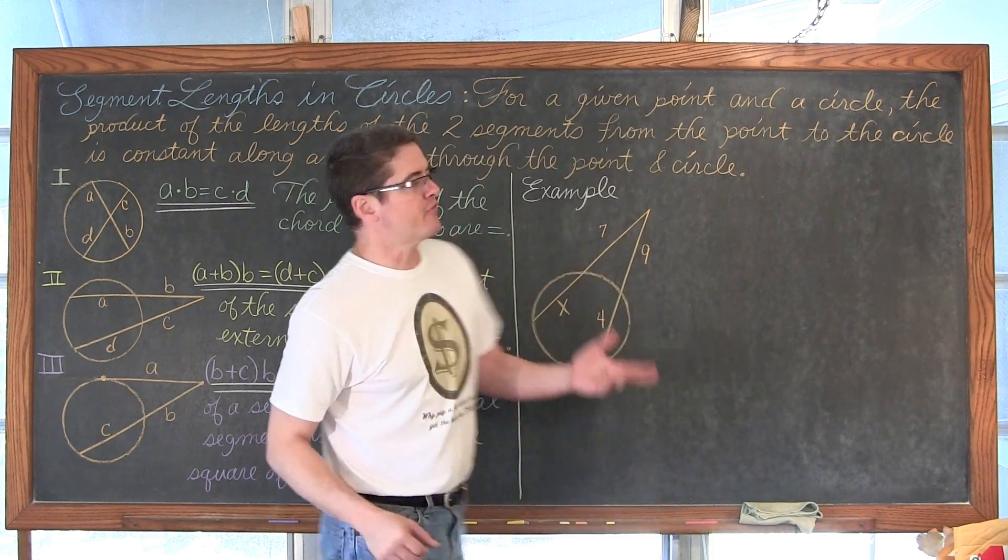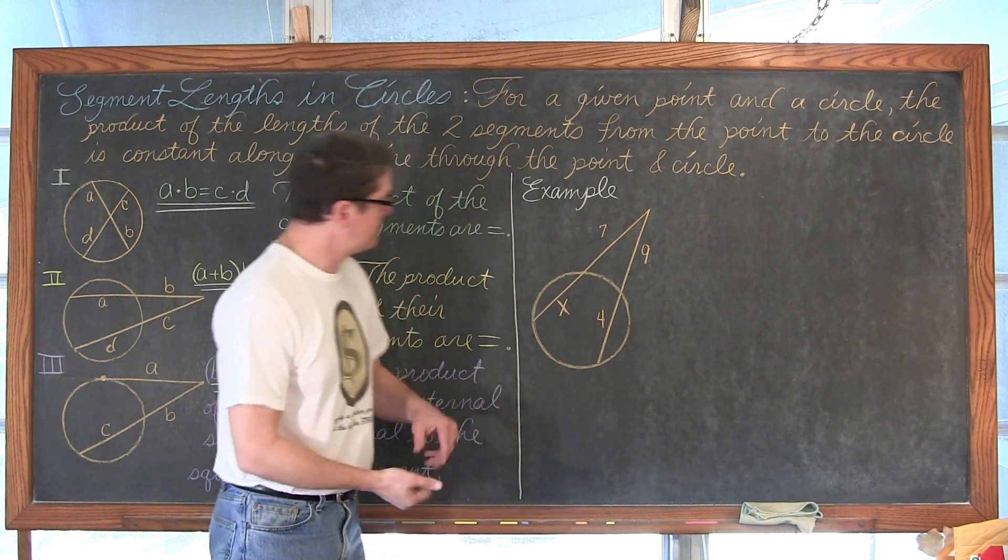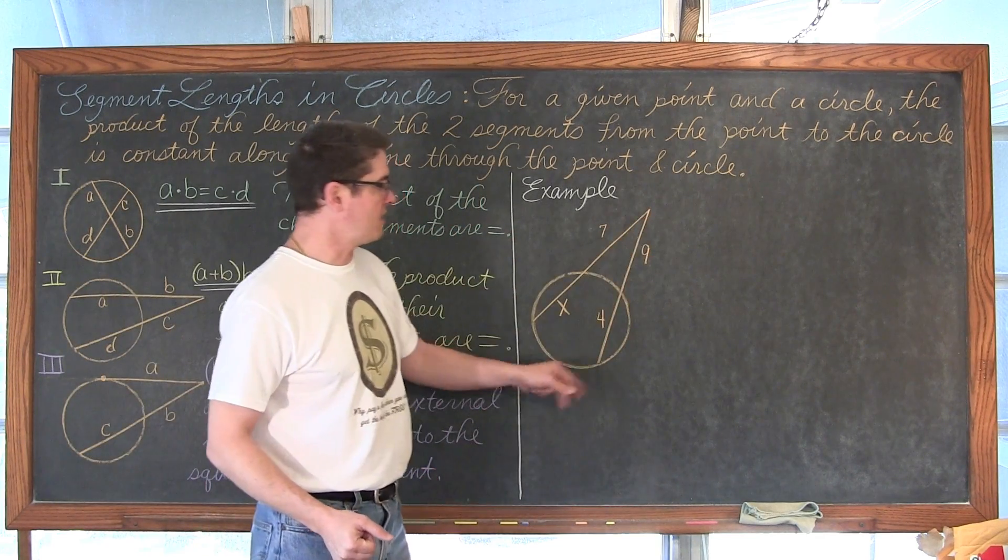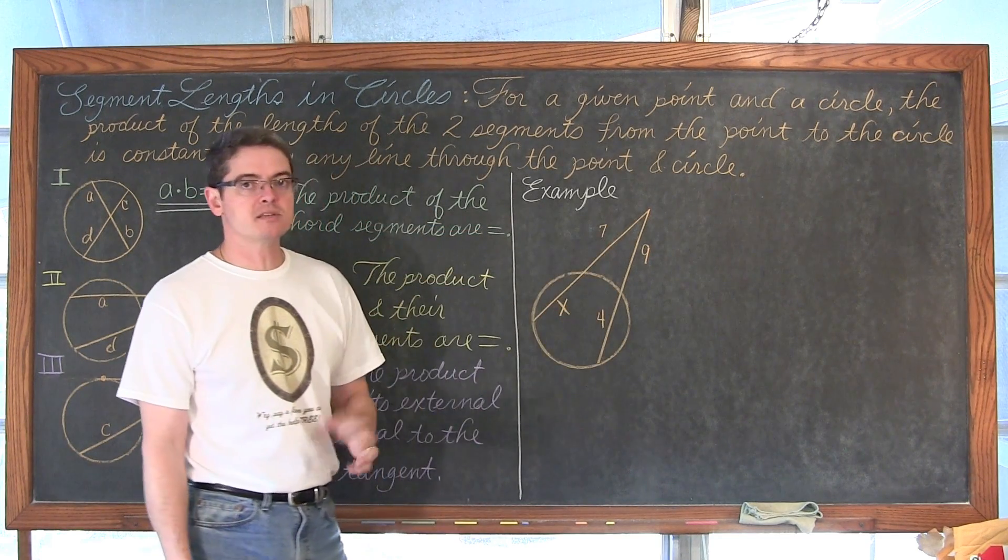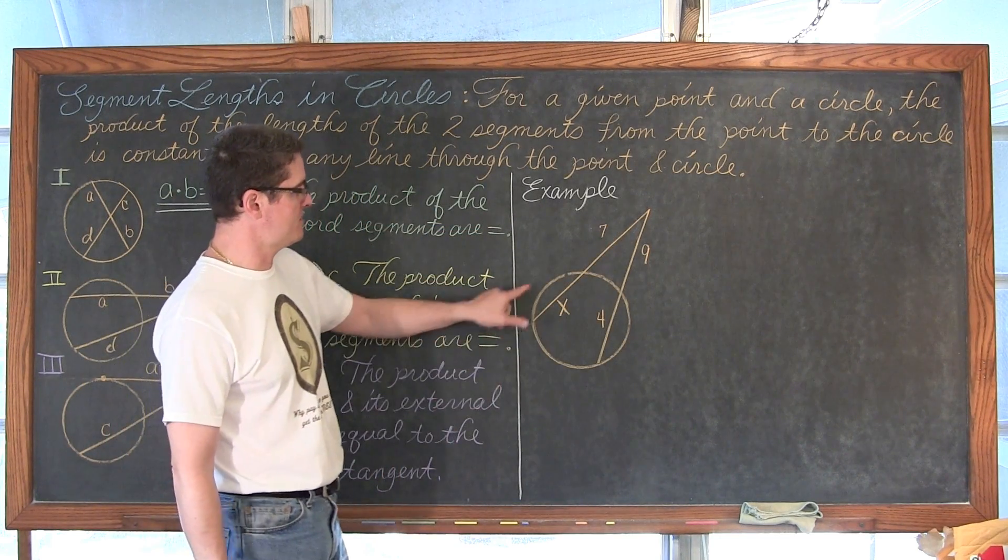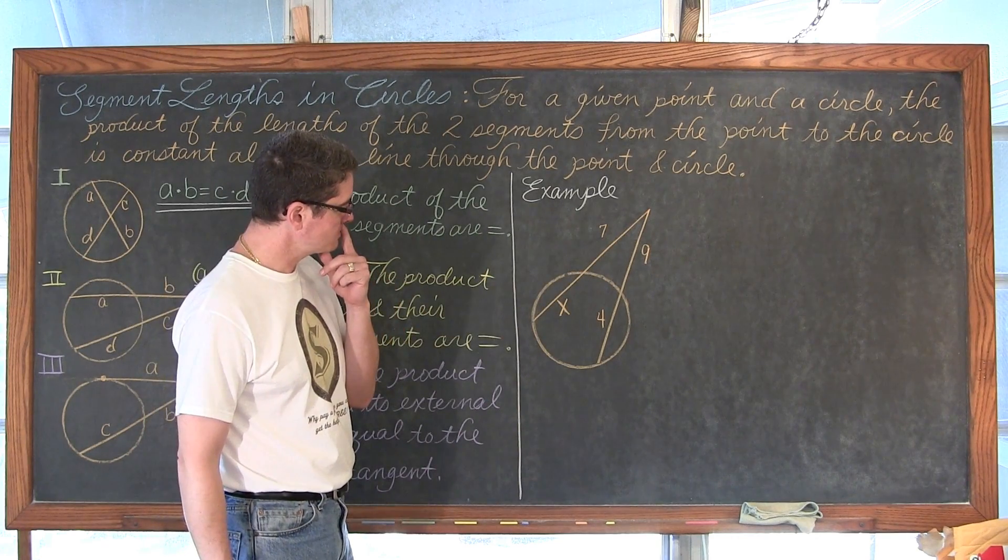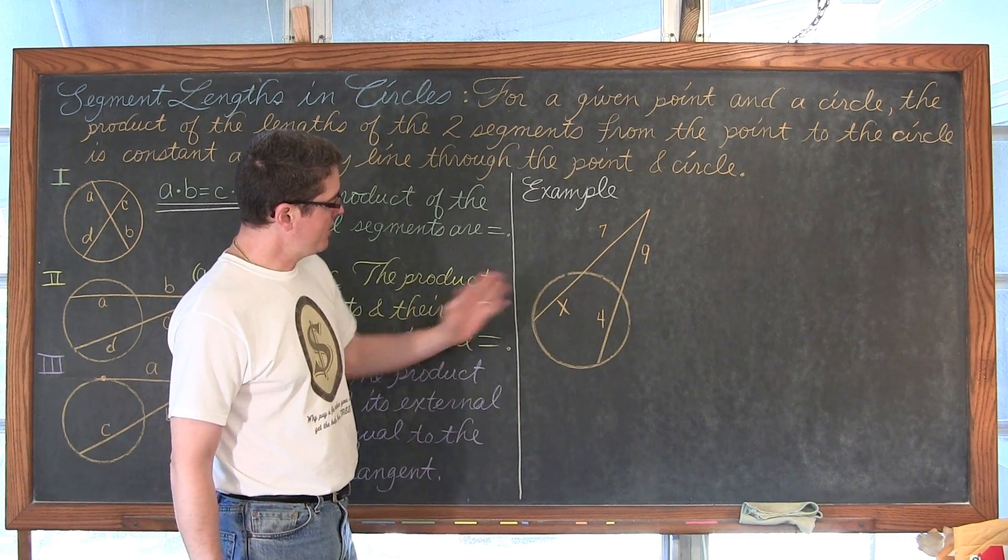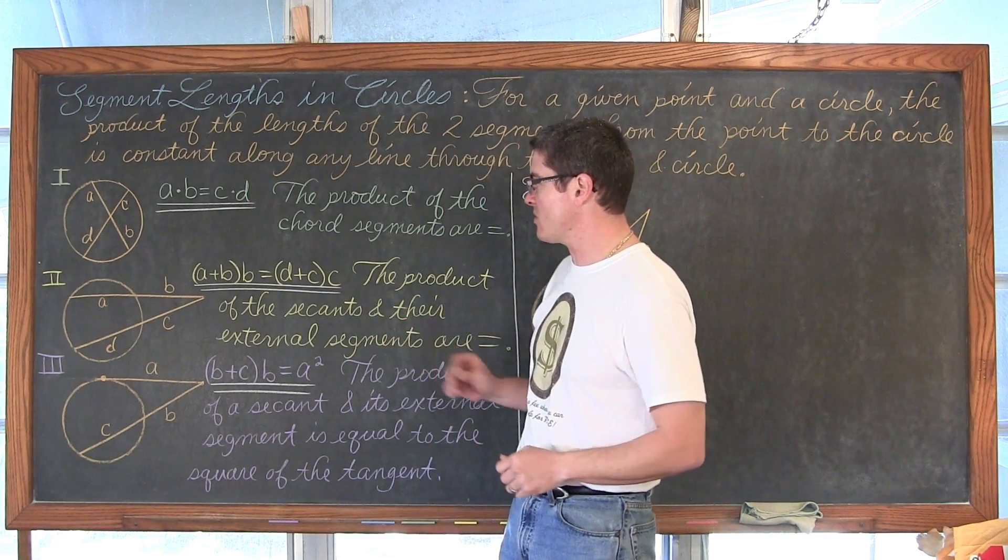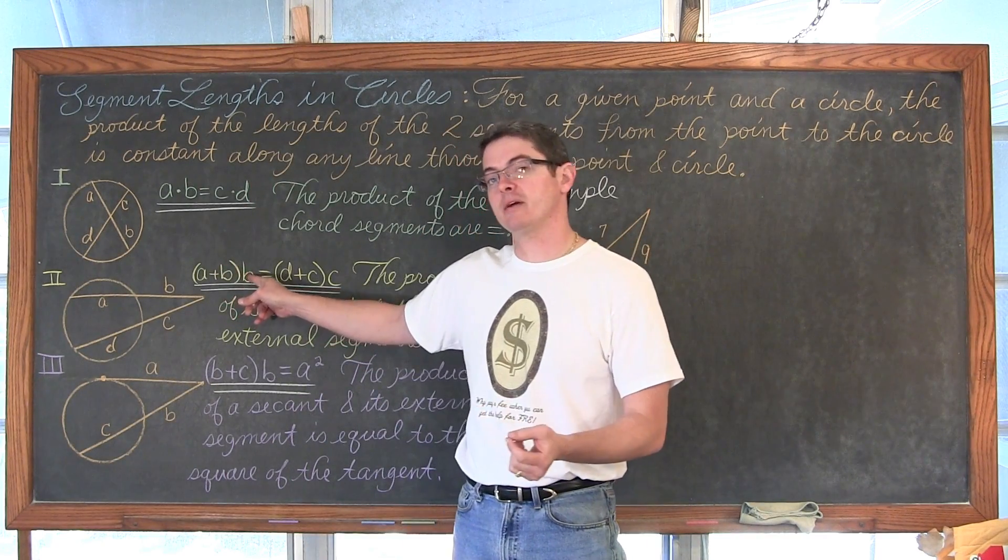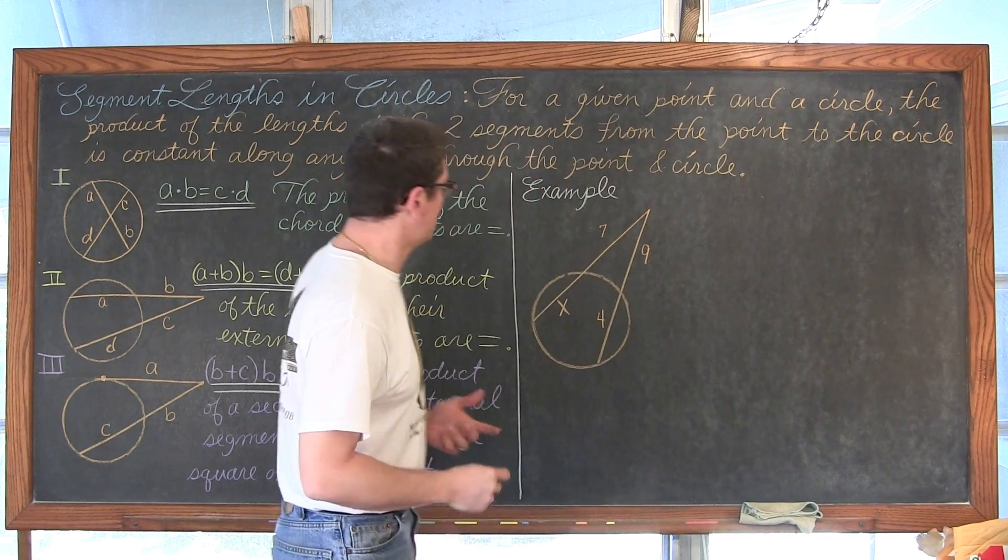Looking over here at our first example, we have a circle with two secant lines. That just means that you are intersecting the circle in two different places. The difference between a secant and a tangent is two intersection points instead of just one, like a tangent line. And we need to find x.